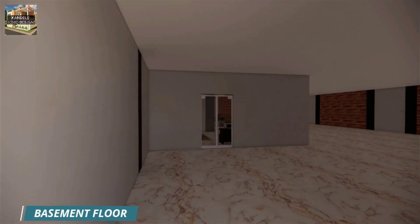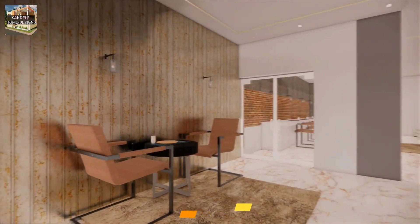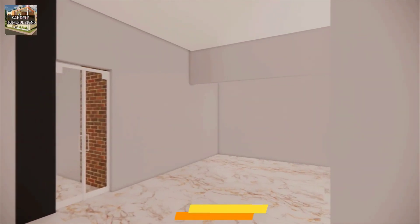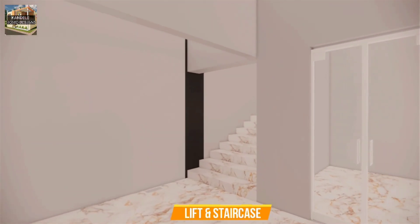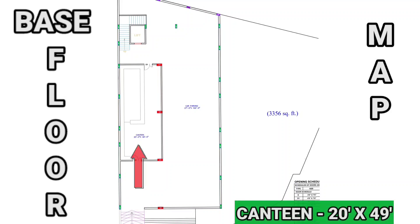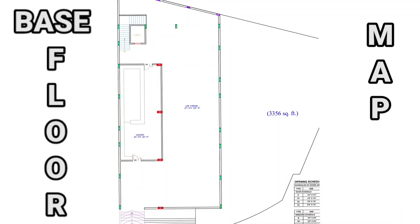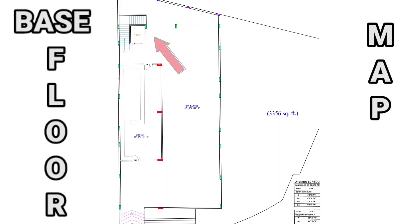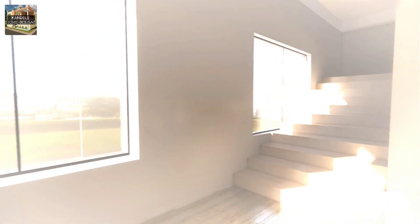Now let's move toward the basement floor. In the basement floor, we have provided a canteen, parking space, lift, and staircase. It is the map of the basement floor. After entering from the entrance, there is a canteen sized 20 feet by 49 feet. On the side of the canteen, we have provided car parking sized 27 feet by 109 feet 9 inches. After the car parking, lift and staircase are provided at the corner side. This is the plan explanation of the basement floor. Now let's move toward the first floor.